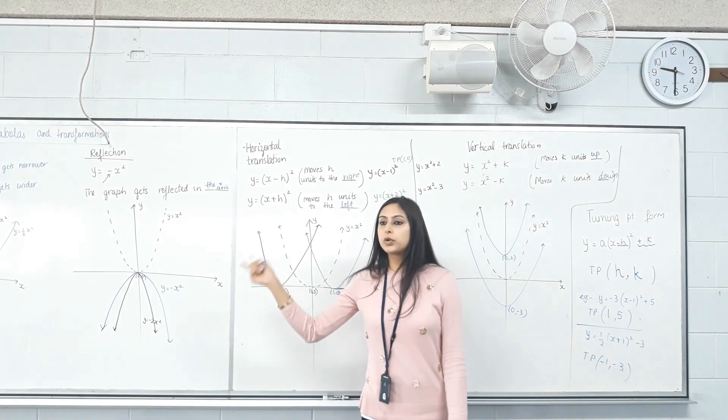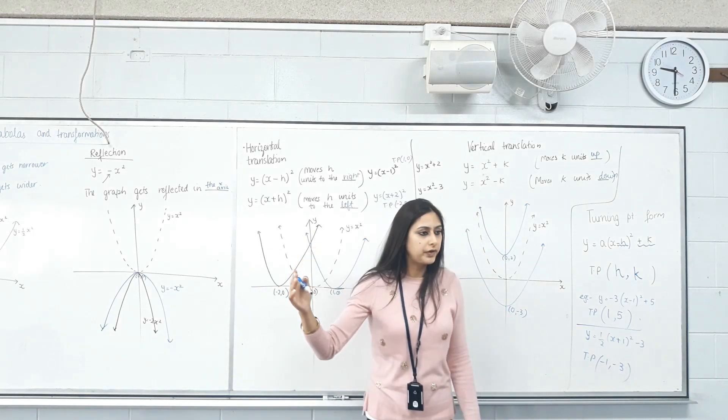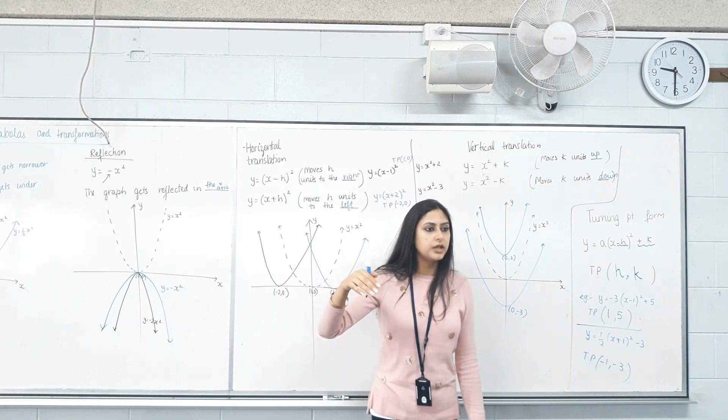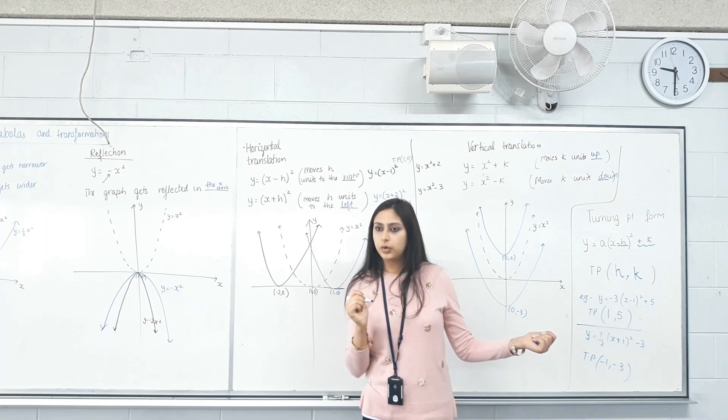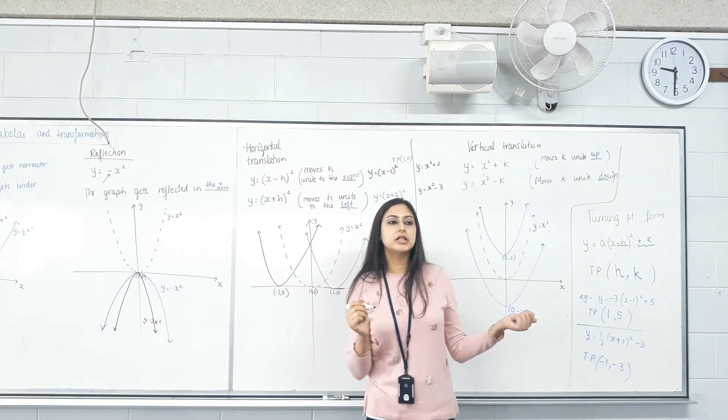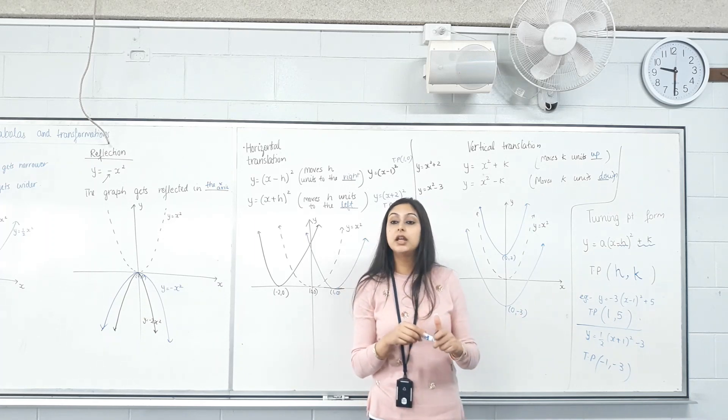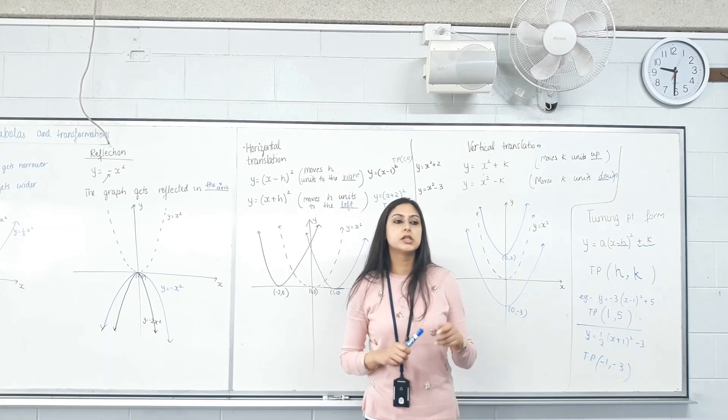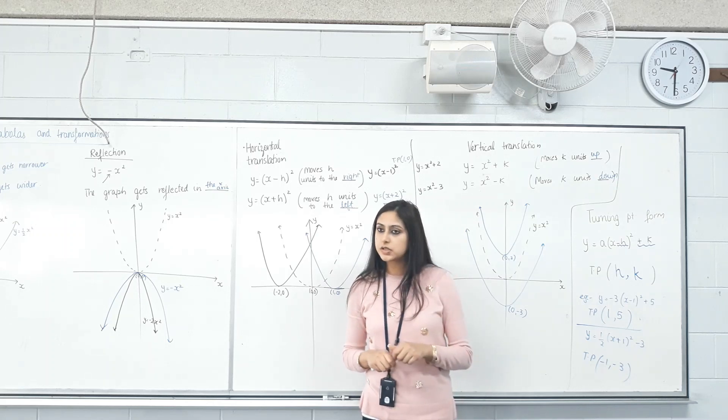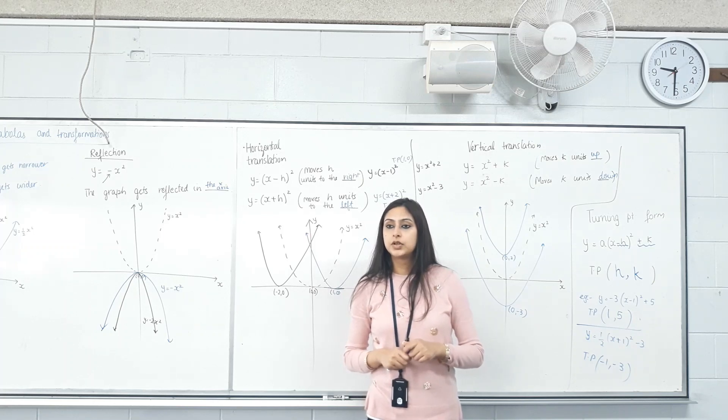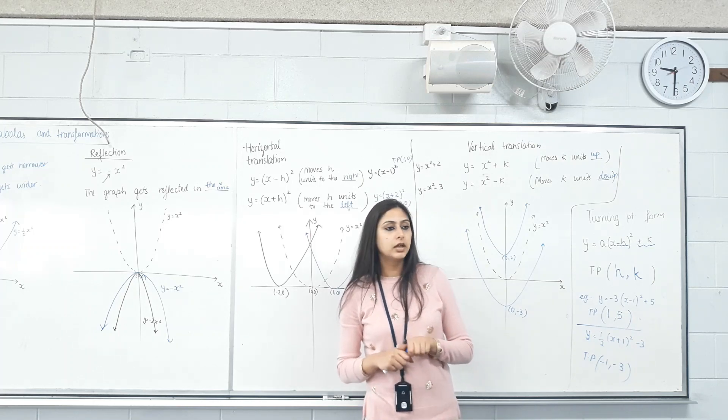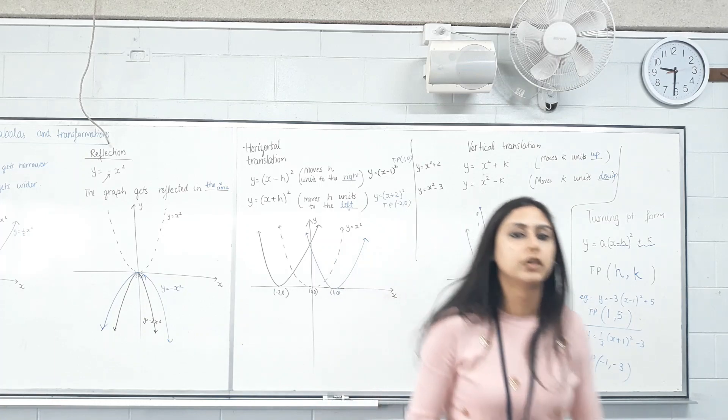So do we understand what dilation does? What's reflection? Horizontal translation, vertical translation. Can we figure out the turning point from the turning point form? Hopefully yes. Once we understand this, we can sketch any quadratic given to us in this form. Any questions? Done? Great.